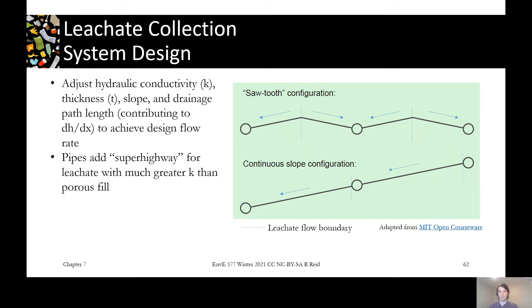The second type is just a continuous slope, and this is a little bit more constructible, easier to build. You don't have to carefully grade it all, but you do lose a little bit of volume by keeping going straight in one direction rather than using the sawtooth to maintain an average flatness.